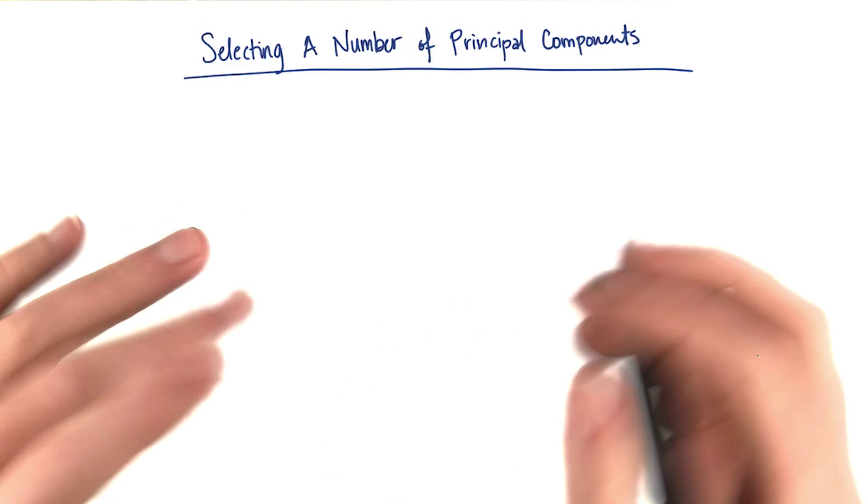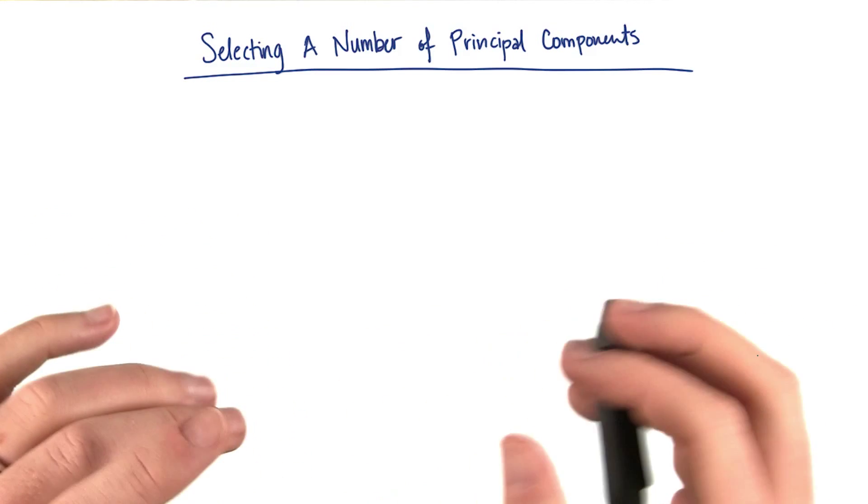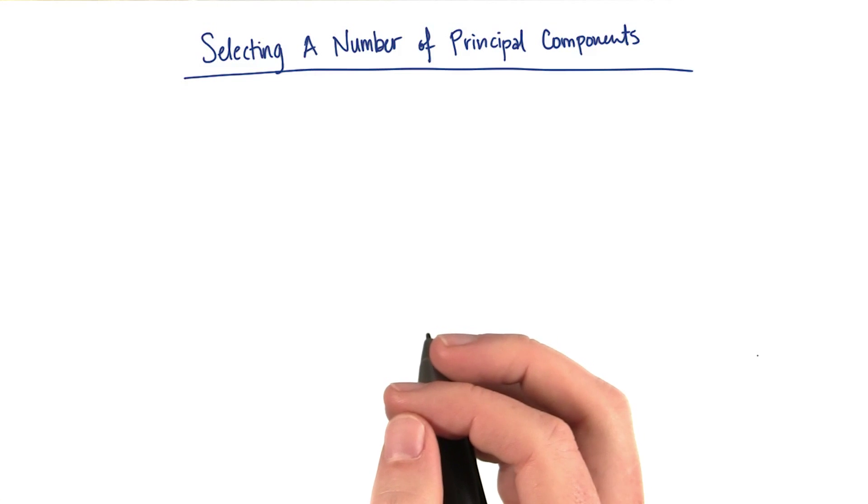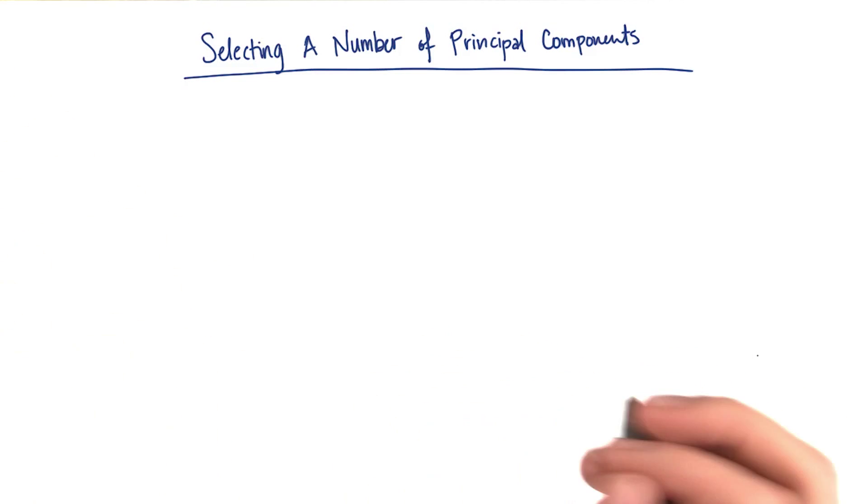In that last example, they went from 1,850 features on the input to 150 principal components. And the question you might be wondering is how did they come up with that number?